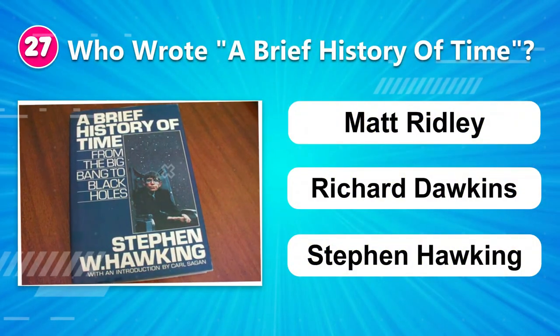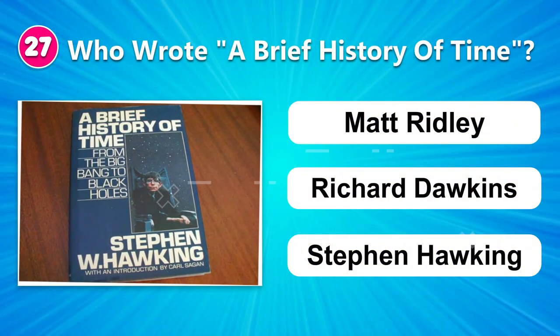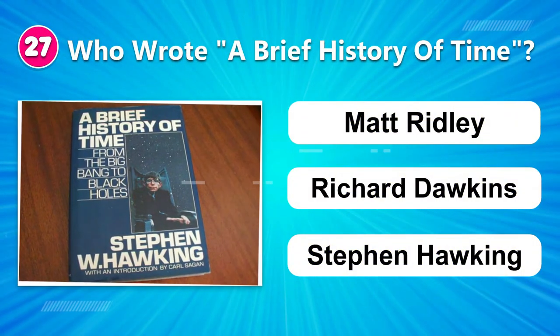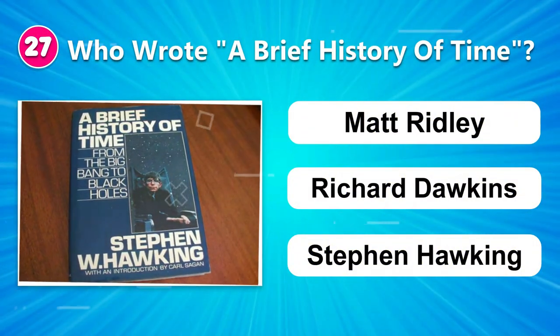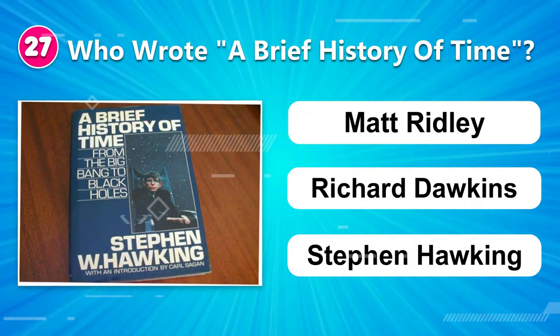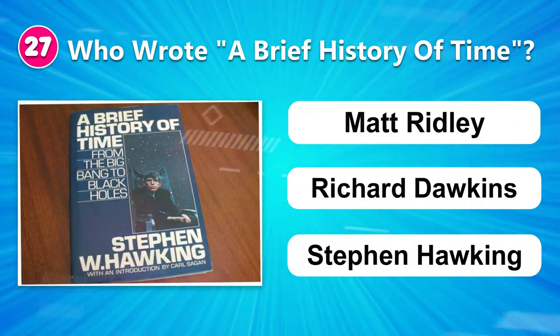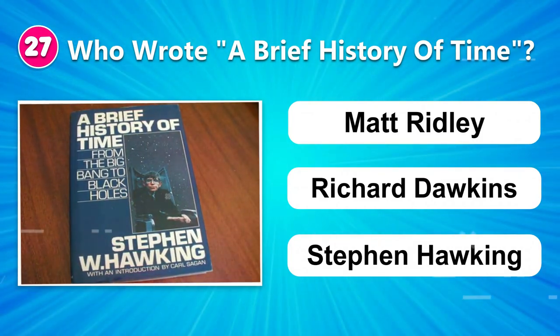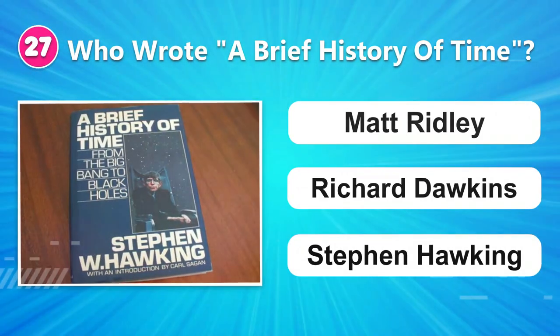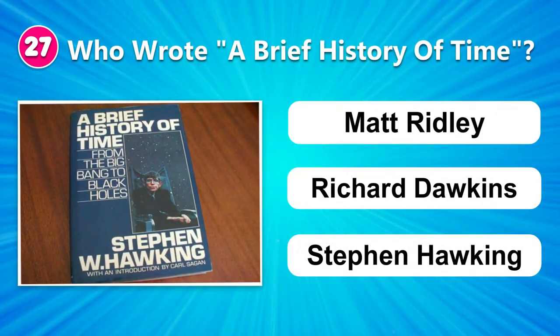Number twenty-seven: Who wrote A Brief History of Time? Matt Ridley, Richard Dawkins, or Stephen Hawking.